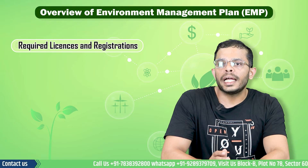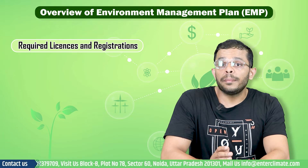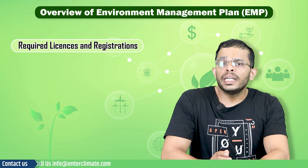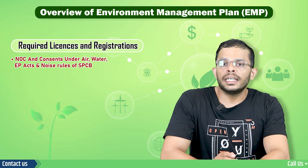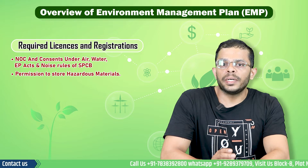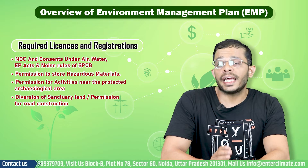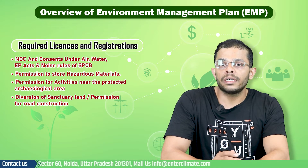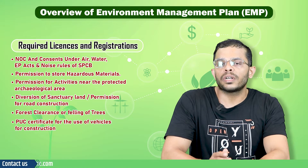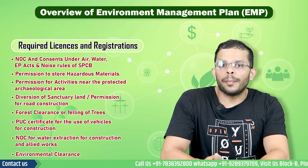To construct a proper Environment Management Plan, the business must obtain all necessary licenses and permissions for their project. Commonly required licenses include NOC and consent under the Air, Water and Environment Protection Act, permission to store hazardous material, permission for activities near protected archaeological sites, diversion of sanctuary land, permission for road construction, forest clearance or felling of trees, PUC certificates for the use of vehicles for construction, NOC for water extraction, and finally environmental clearance.